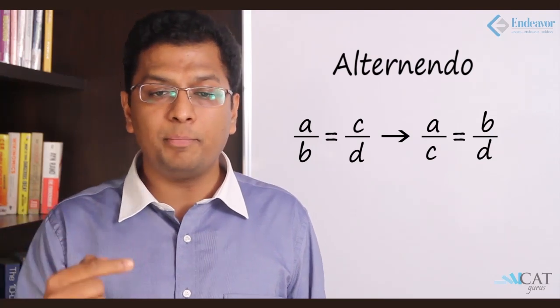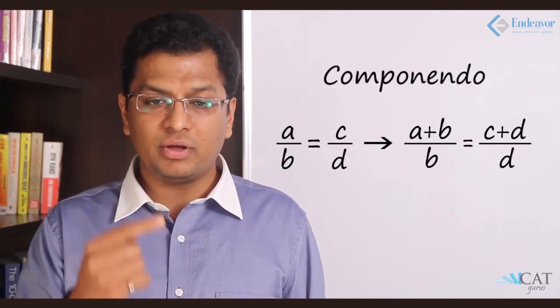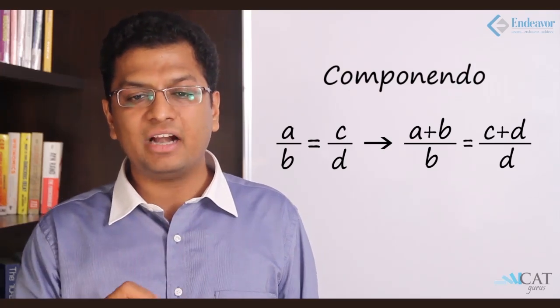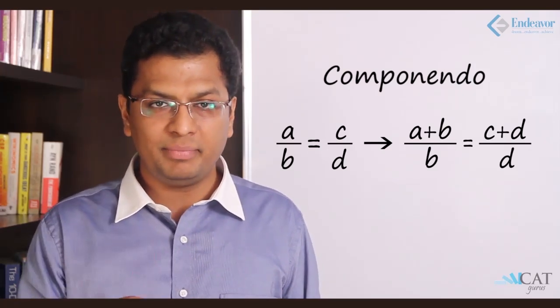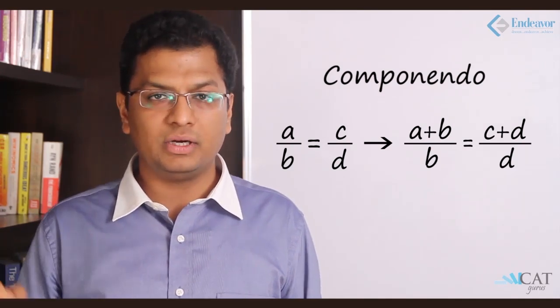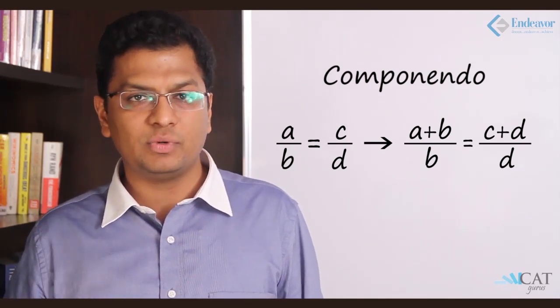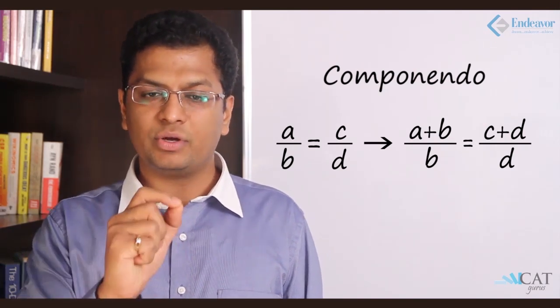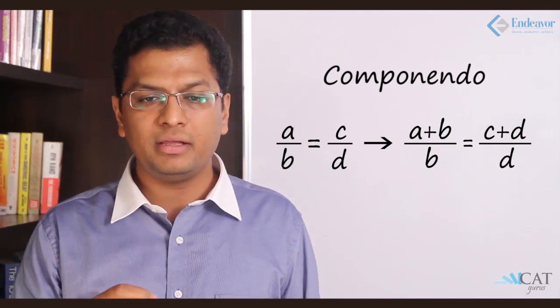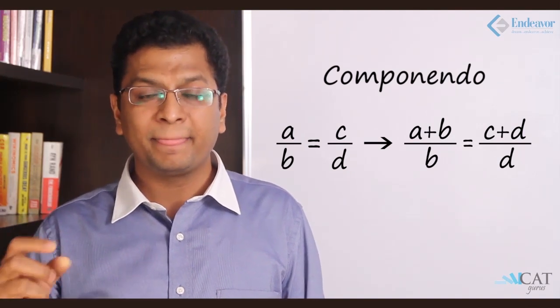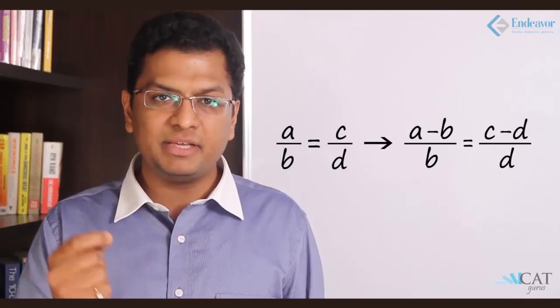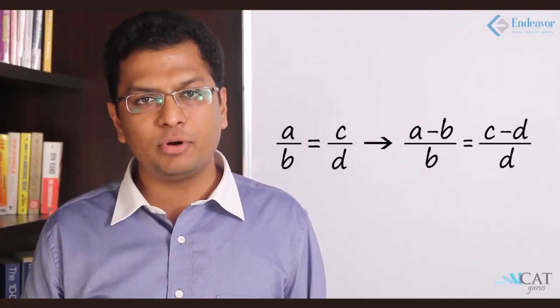Let's look at another one - componendo. What is componendo? A, B, C, D are said to be in proportion. If I add 1 to both the sides, A upon B plus 1 equals C upon D plus 1. The equation is satisfied adding 1 to both sides, so it becomes A plus B upon B equal to C plus D upon D. Instead of adding, if we subtract 1, it becomes A minus B upon B and C minus D upon D.